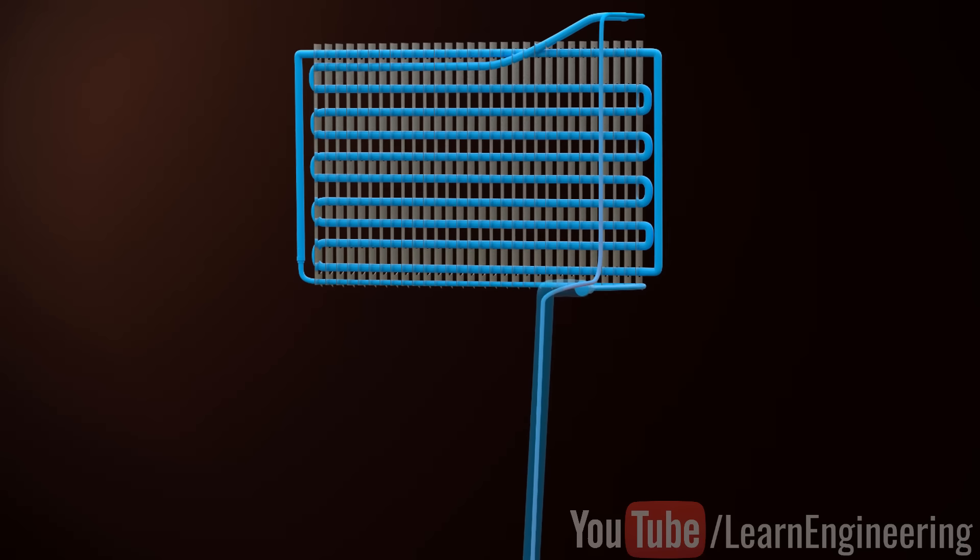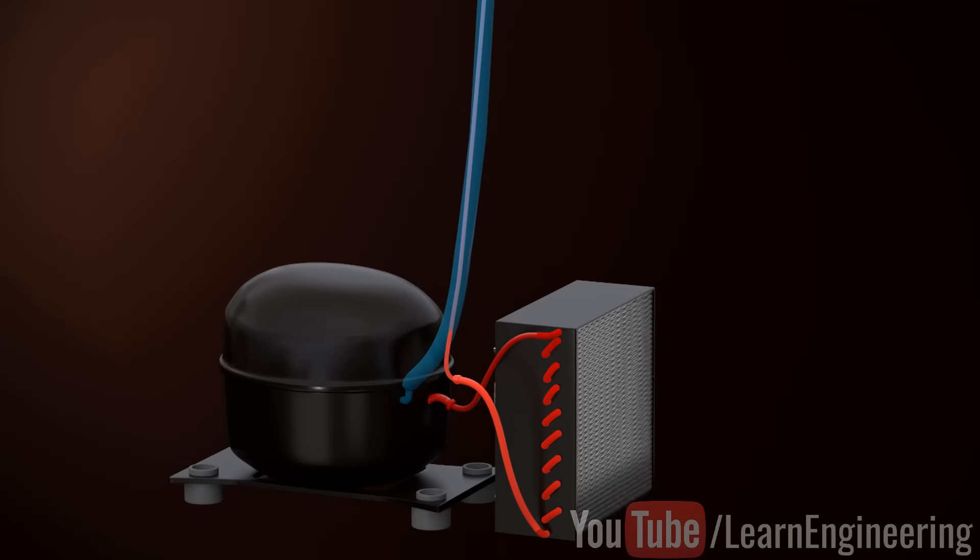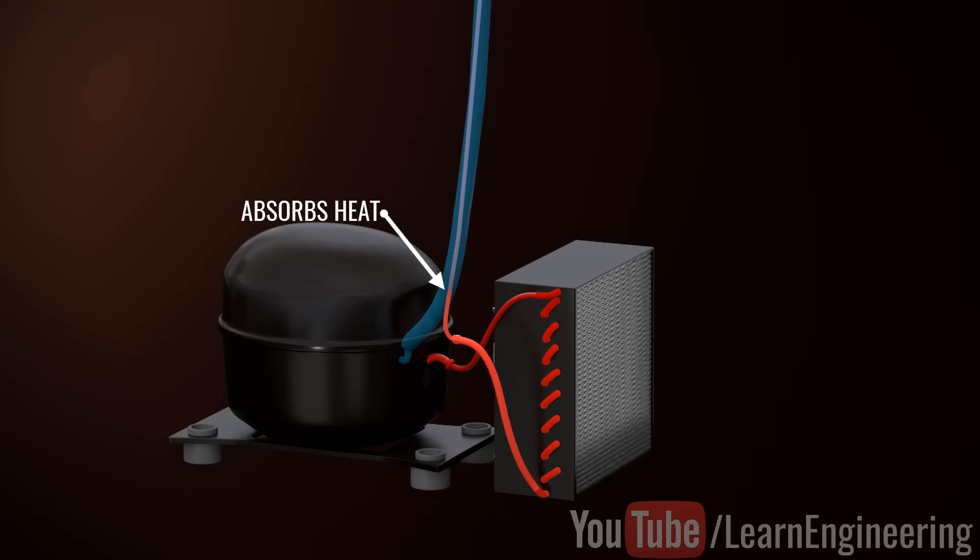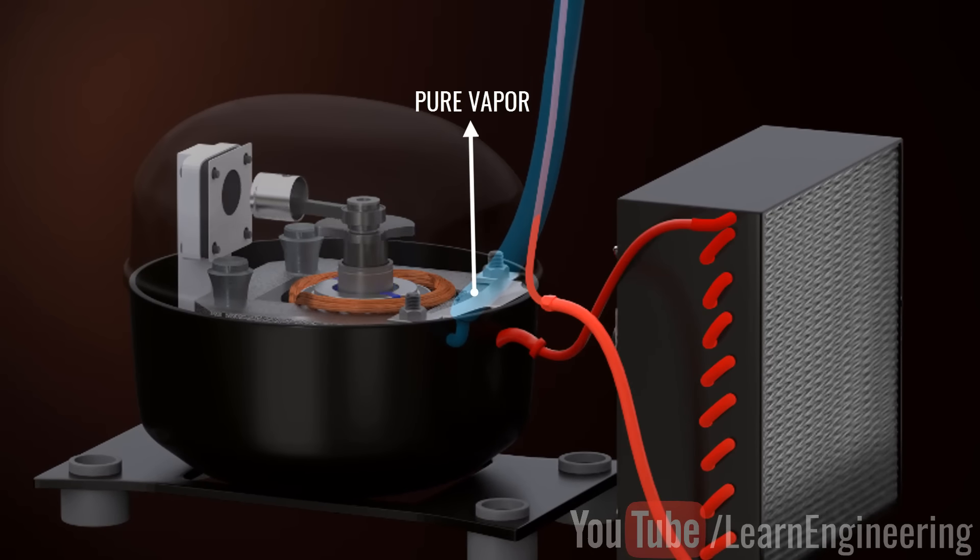On the other hand, the evaporator exit coil absorbs heat. This will ensure that the refrigerant in the evaporator exit line has transformed into pure vapor. This is good for compressors, which are designed to handle only pure vapor.